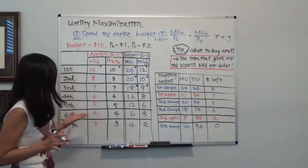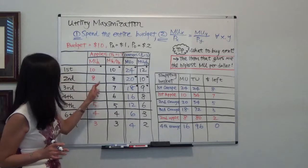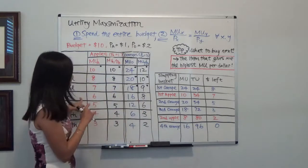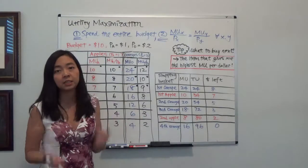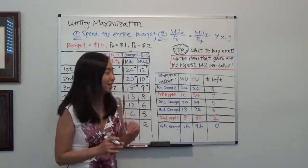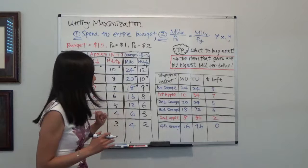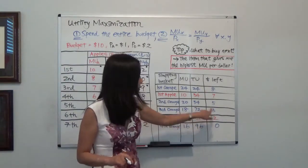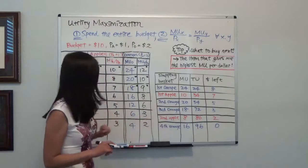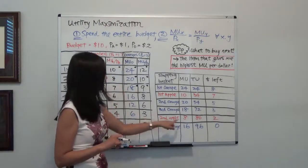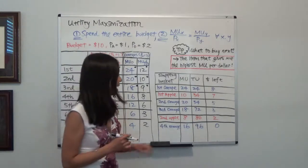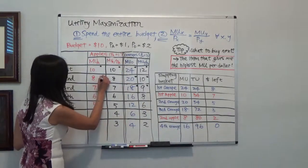Now I have $3 left. The fourth orange or the second apple? Their marginal utility per dollar is exactly the same — both are 8. So it doesn't matter which I put next. Suppose I put the second apple. The price of an apple is $1, so I have $2 left. The second apple gives a marginal utility of 8, so my total utility is 72 + 8 = 80.